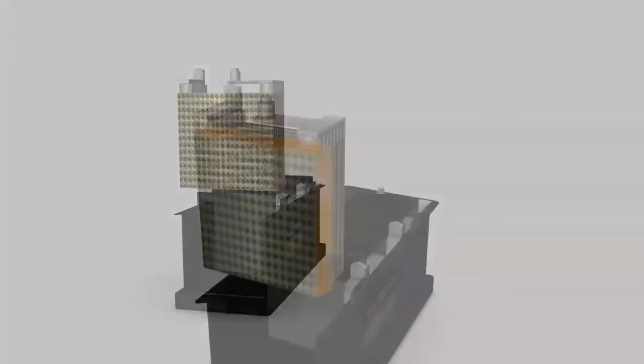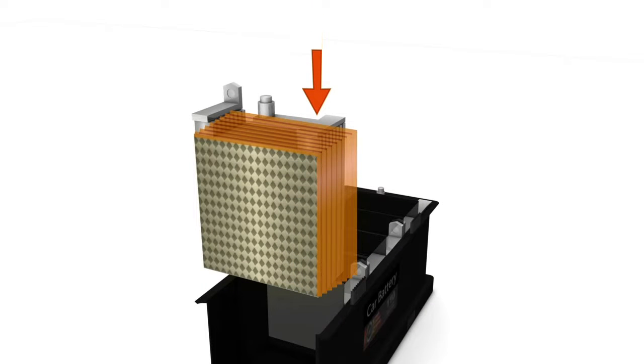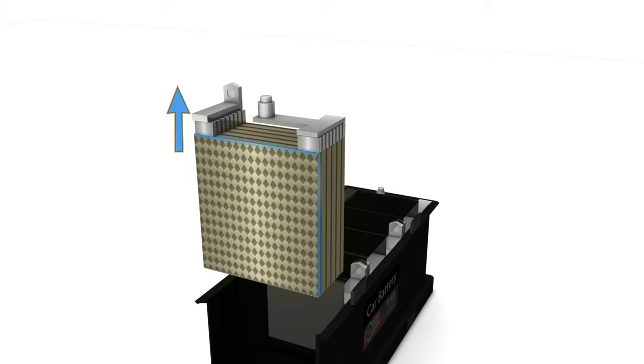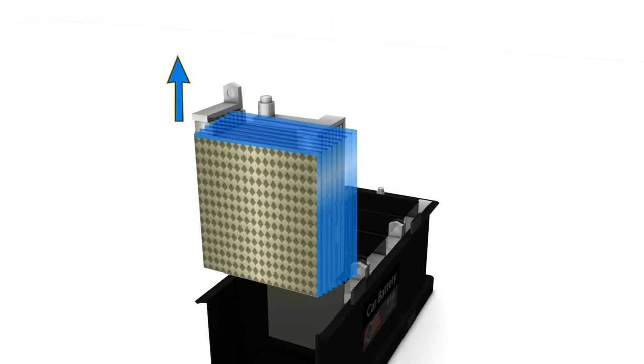The positive lead dioxide plates carry electrons in (orange color plates), and the negative sponge lead plates release electrons (blue color plates).